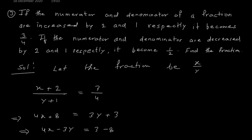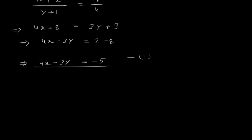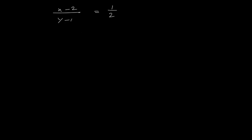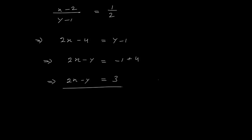Next, when the numerator and denominator are decreased by 2 and 1: (X minus 2) upon (Y minus 1) equals 1 upon 2. Cross multiplying: 2X minus 4 equals Y minus 1, giving 2X minus Y equals 3. This is equation 2.